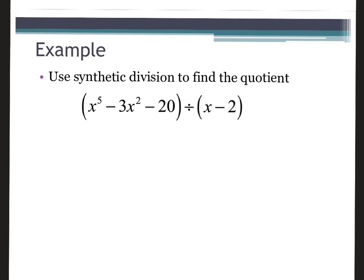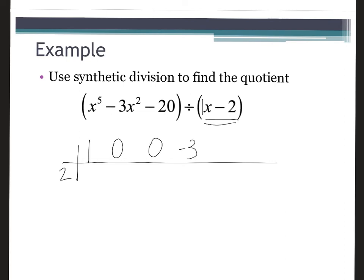I'm allowed to use synthetic division here because this is a binomial with a leading coefficient of one, so the number out front is two. Across the top, it's not just a one, a negative three, and a negative twenty — I need a number for every power from five all the way down. So: one x to the fifth, zero x to the fourth, zero x to the third, negative three x squared, zero x, and negative twenty. A helpful tip: if the highest degree is five, there should be six numbers across the top — one more than the degree.